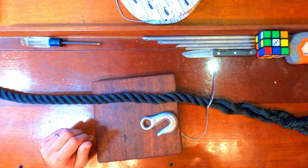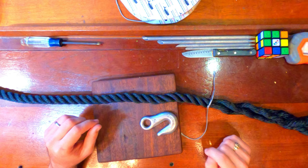In this episode we're going to be making an anchor snubber by splicing this chain hook directly onto the snubber line itself using a rope to chain splice.